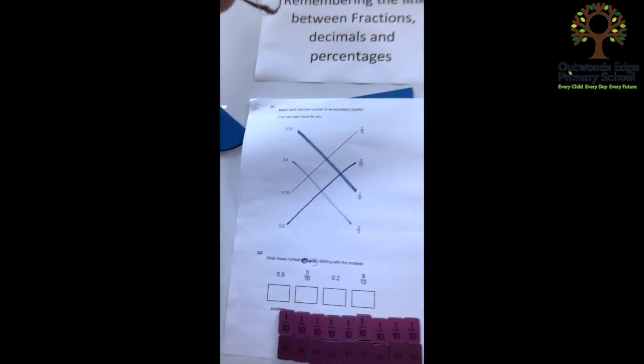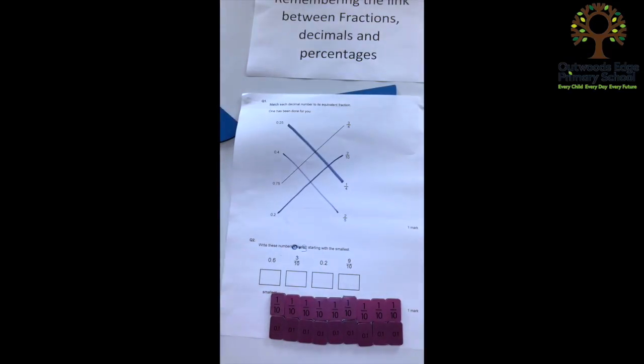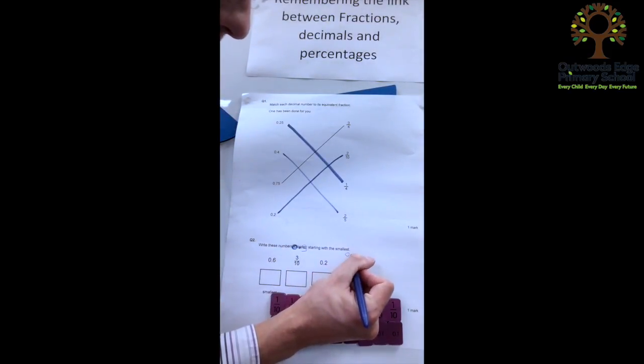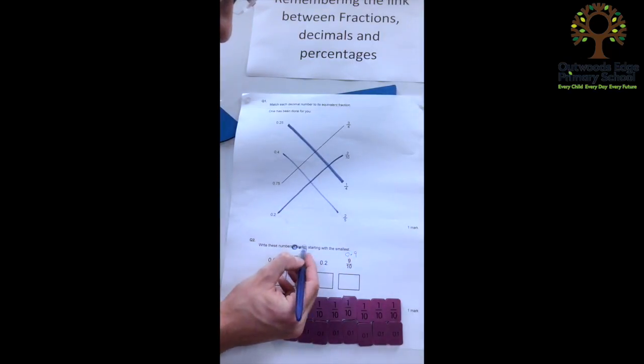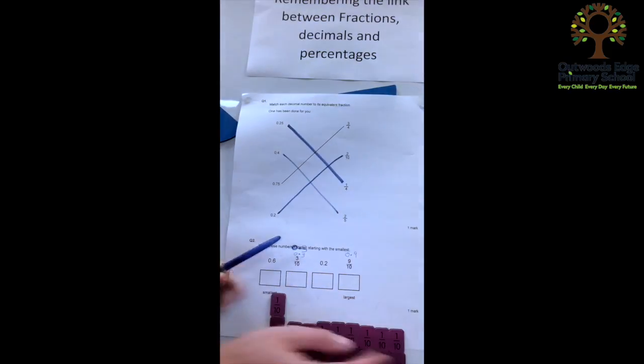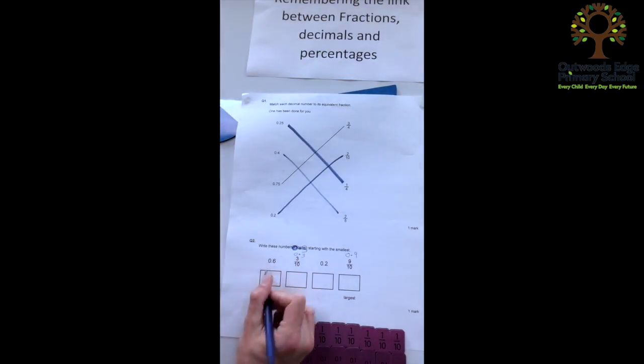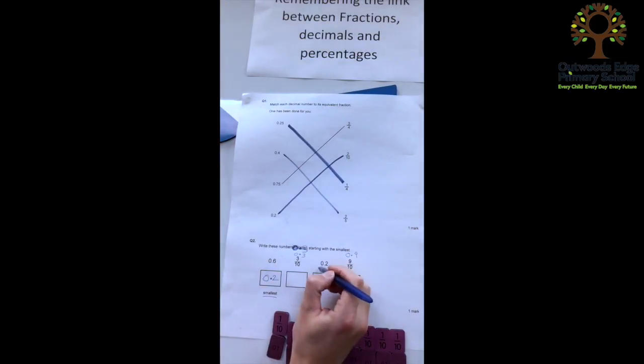And now, having built that visual model for the children to see, having added those on, I'll write that one a little bit neater, because it's a little bit hard for you guys to see. I can now order those, and I can see that actually, 0.2 is the smallest. So I'm going to record that as the smallest, as it says here.